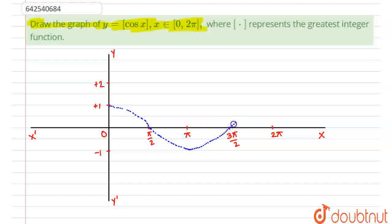And for cos 2π, it becomes again 1. So, this is the graph of y equals cos x.